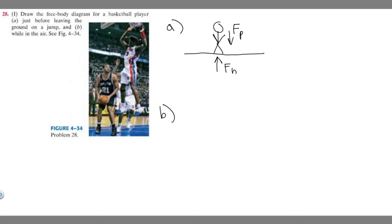B is going to be while in the air, so we're going to draw them in the air. When they're in the air there's only one force, F sub P, the force of the player, mass times gravity. That's the only force this way. Keep in mind, since